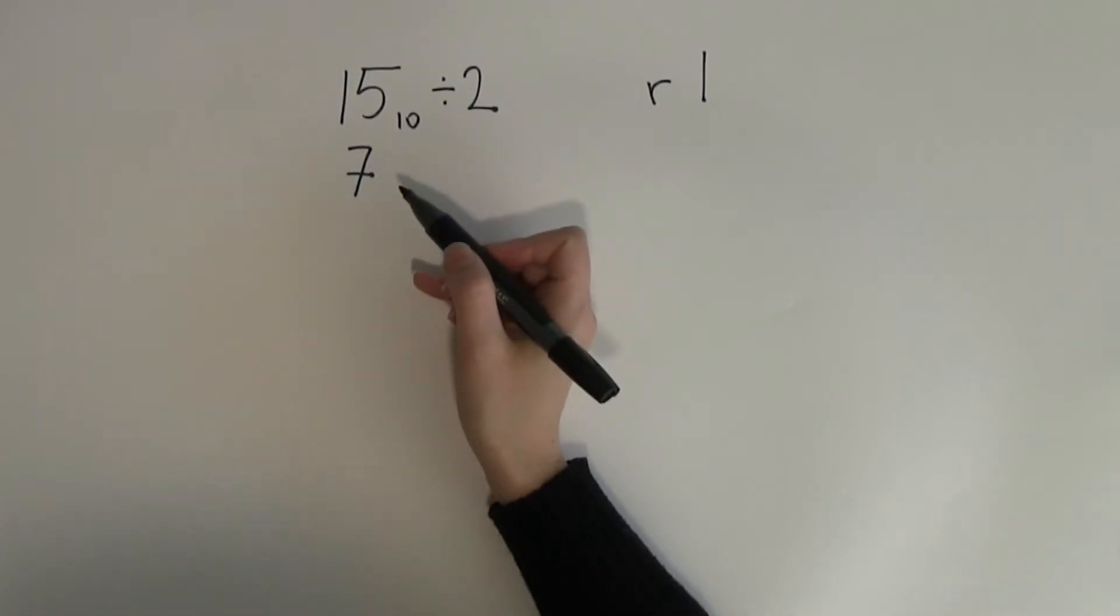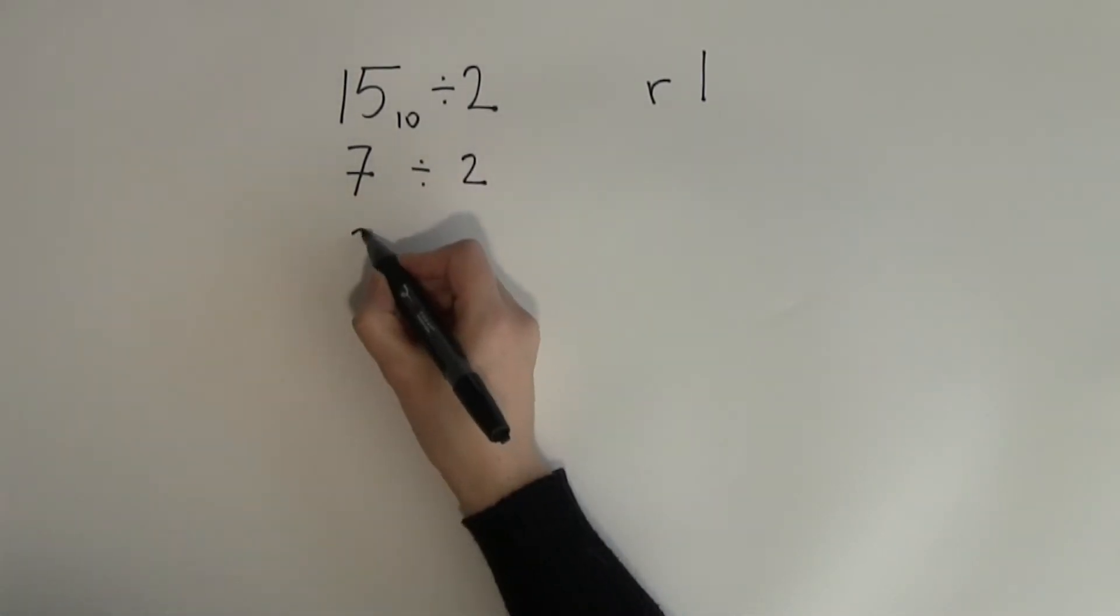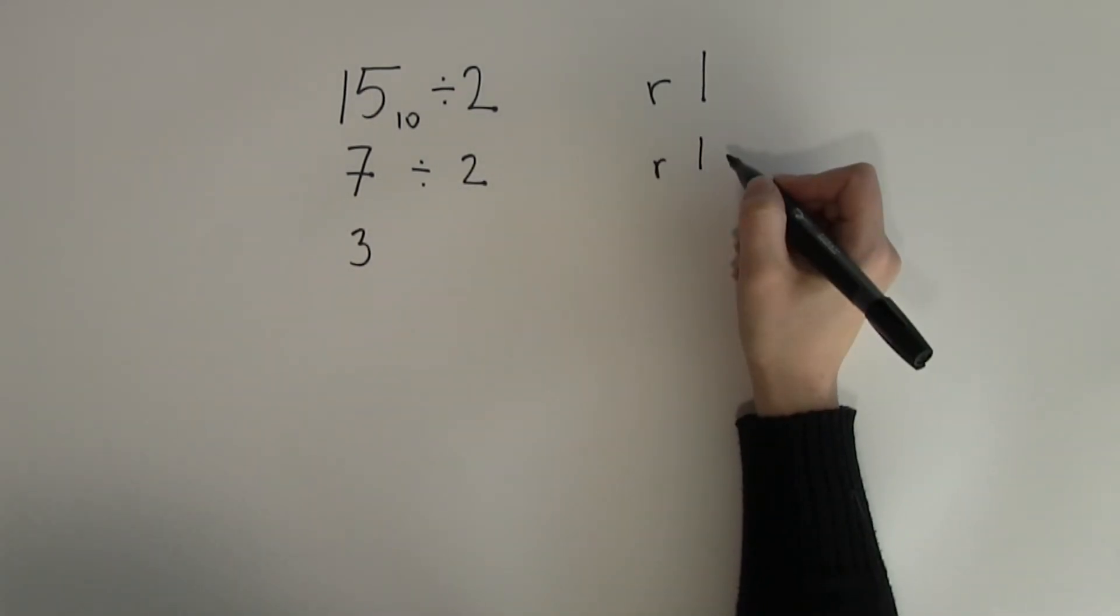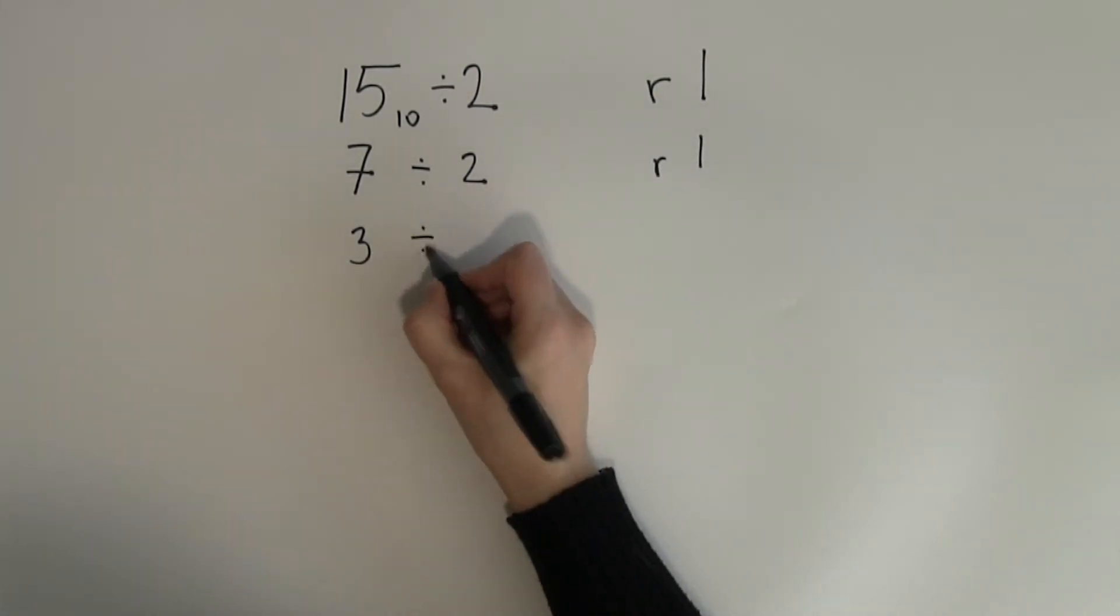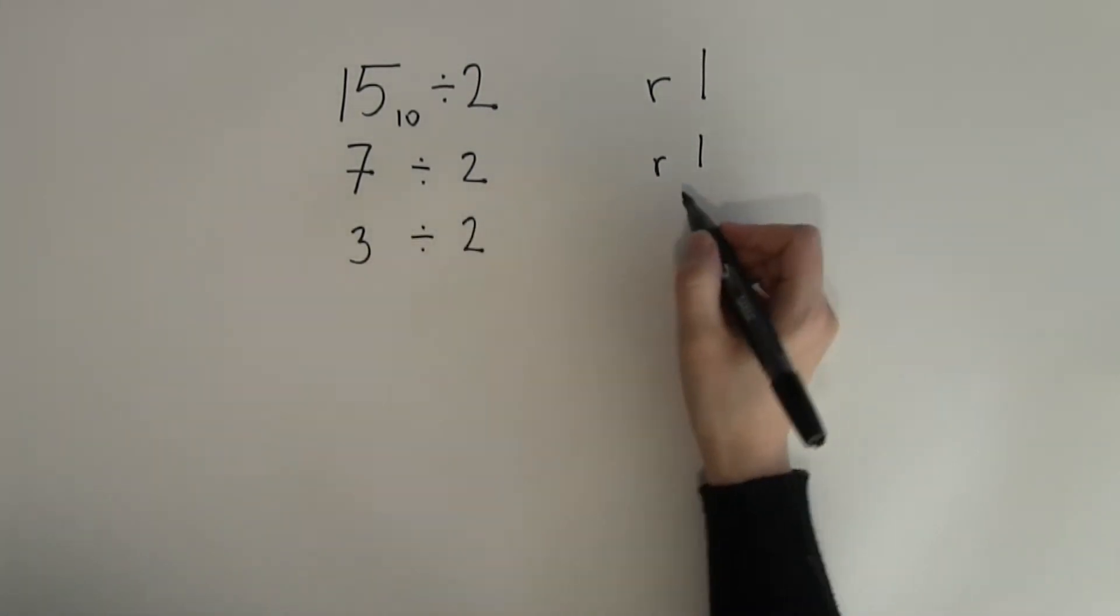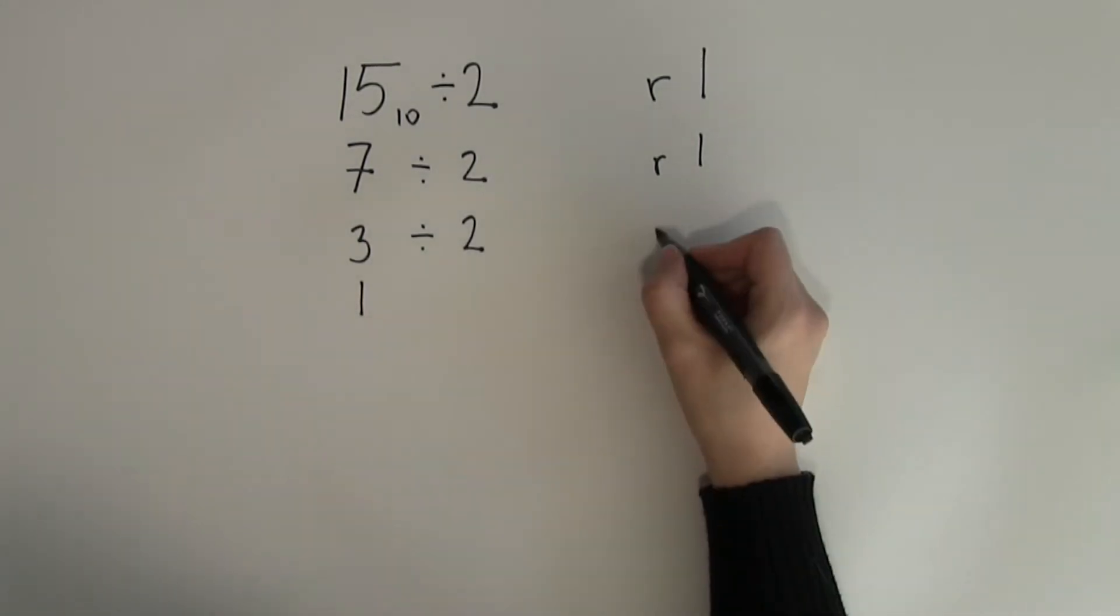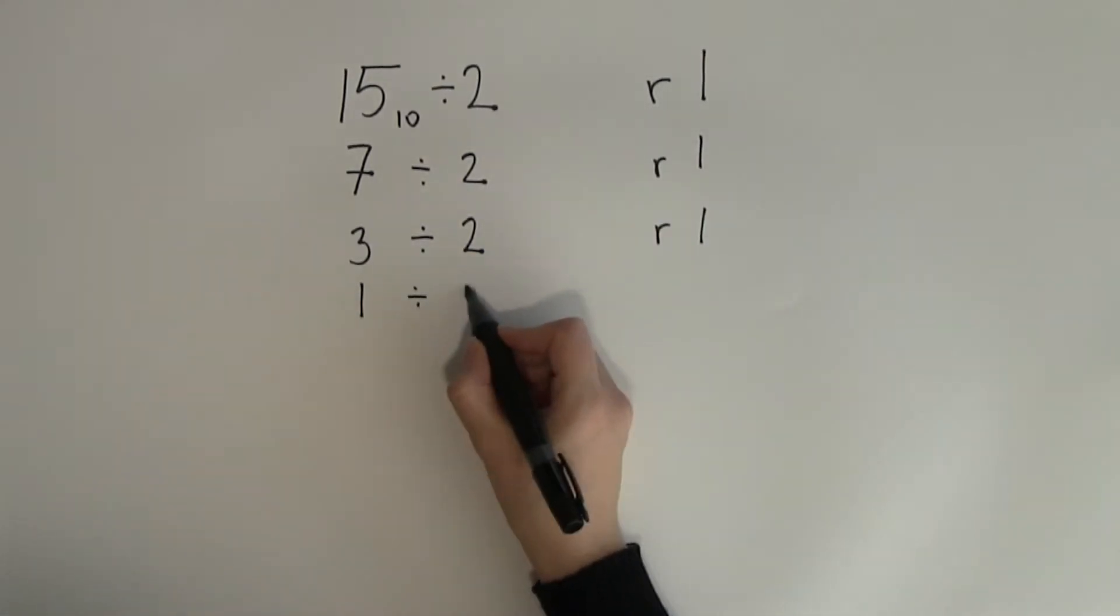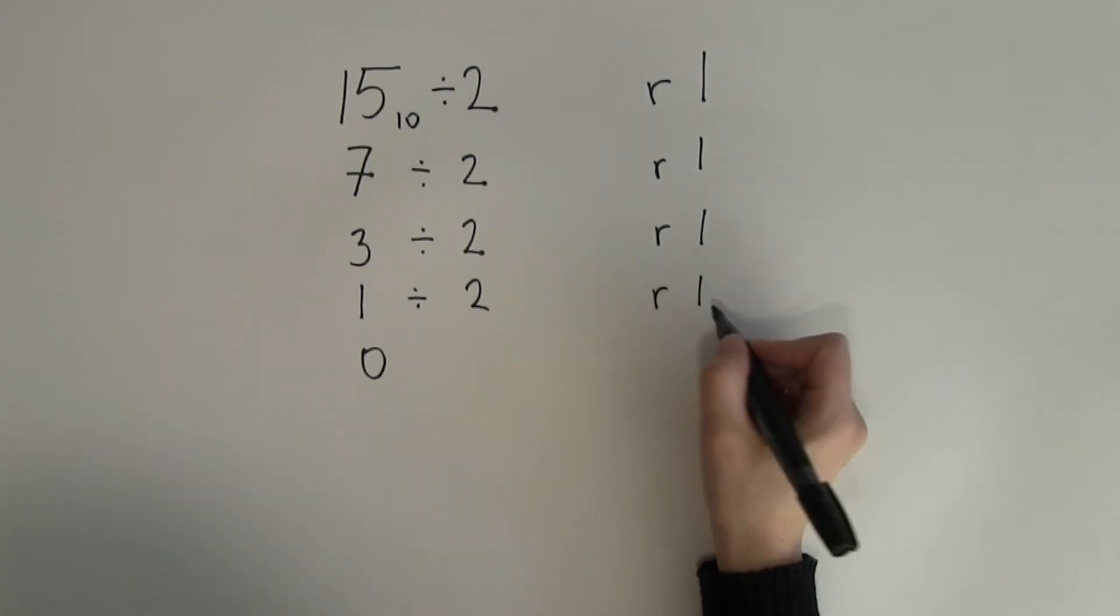Then divide the number again. 7 divided by 2 gives me 3 and again I have got a remainder of 1 because 2 times 3 is 6 plus 1 makes 7. 3 divided by 2 gives me 1 because 1 times 2 is 2 but I still got a remainder of 1. And then 1 divided by 2 gives me 0 and the remainder is 1.